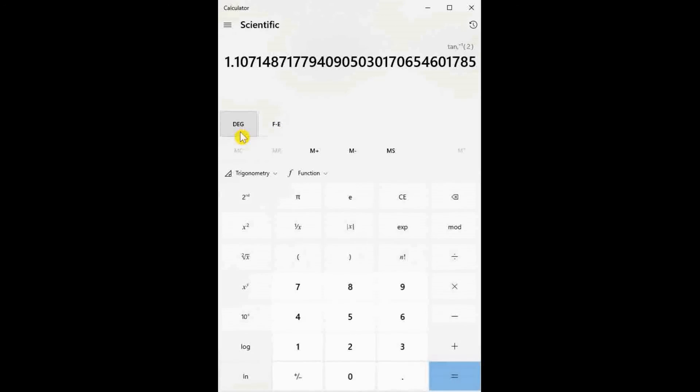Switch to degree mode to find the angle in degrees whose sine is 0.777. 0.777, trig, second, inverse sine, 51 degrees.